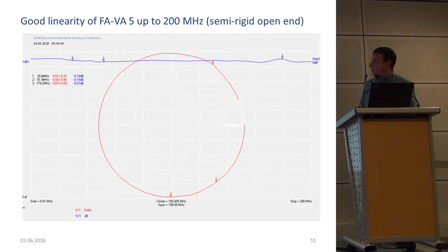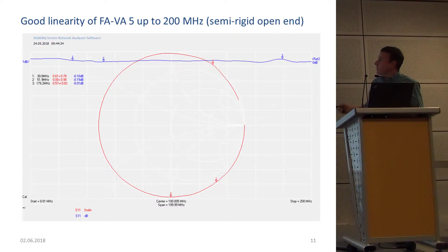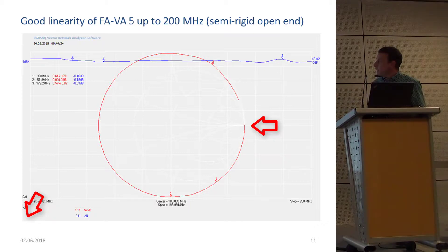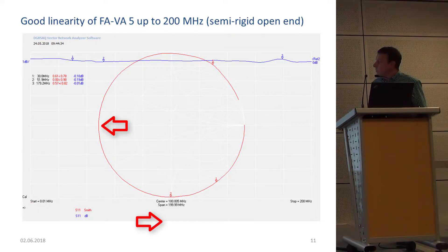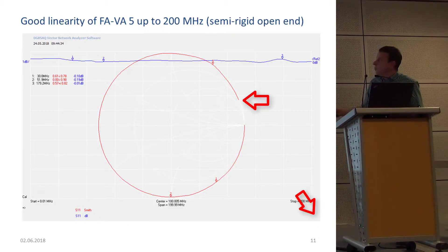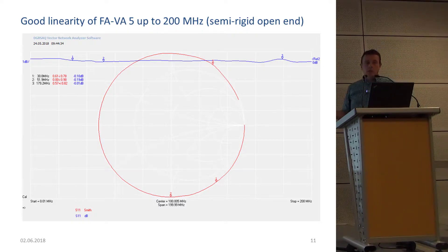The second accuracy test is linearity. A common method is attaching, after calibration, a very low-loss open-ended cable — here a semi-rigid cable. We look at how it traces in the Smith chart. An open-ended cable at DC has infinite impedance (far right of Smith chart); as frequency increases it travels around the outer circle, arriving at the short point when it becomes a lambda/4 transformer, and this repeats. The question is: how well does it follow the outer circle? As you can see, except for two small deviations, up to 200 MHz the trace is very precise, confirming accurate linearity.